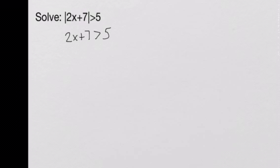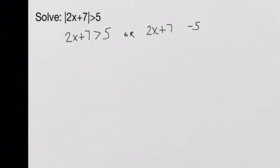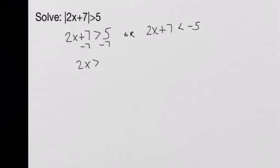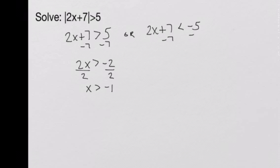We solve this inequality the same way as before. Dropping the absolute value bars creates two problems: 2x plus 7 is greater than 5, and for the second problem we change the sign to negative 5 and flip the inequality. Solving the left side: subtract 7, giving 2x greater than negative 2; divide by 2, so x is greater than negative 1. On the right side: subtract 7, giving 2x less than negative 12; divide by 2, so x is less than negative 6.